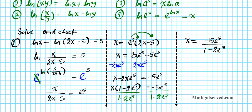Now the question is, does this answer make sense? The argument of a natural logarithmic function must be positive, or you'll have a domain error. Is this a positive or negative number? We can see that this is positive because e is approximately 2.7. If you raise it to the fifth power and multiply by 2, it's definitely bigger than 1, so the denominator is negative, and dividing two negative values gives a positive number. So there are no domain violations here.